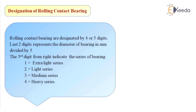Rolling contact bearings are designated by 4 or 5 digits. The last two digits represent the bore diameter of the bearing in mm divided by 5. The third digit from the right indicates the series: 1 for extra light series, 2 for light series, 3 for medium series, and 4 for heavy series.